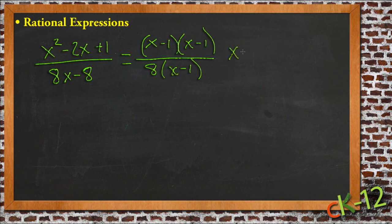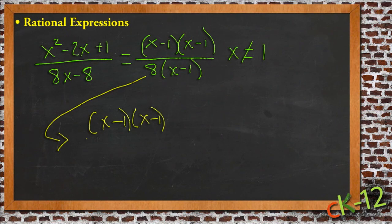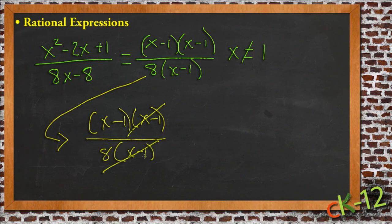And then we move on and finish simplifying this. So we take this down like we did with the last one, and we write x minus 1, x minus 1 over 8 times x minus 1, and then cancel. And this time we can see that our simplified version, x minus 1 over 8, doesn't show any excluded values.